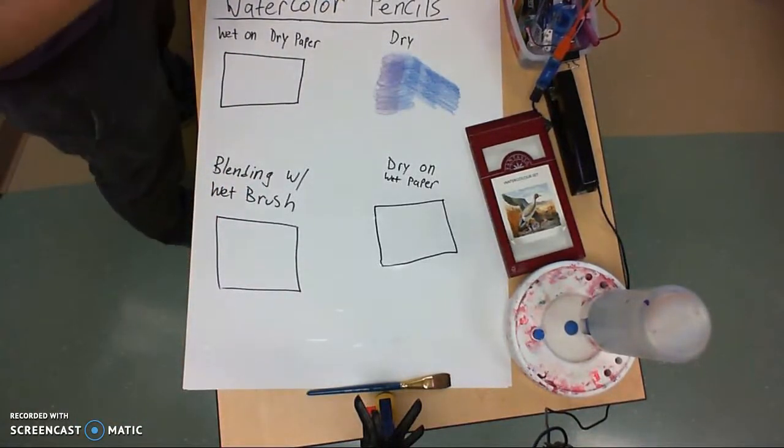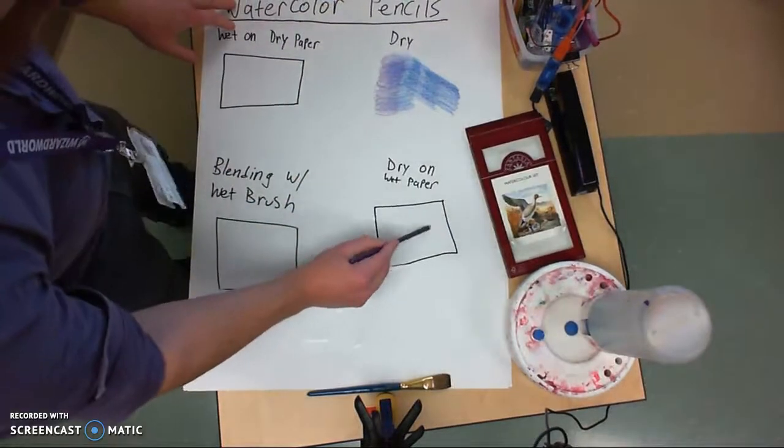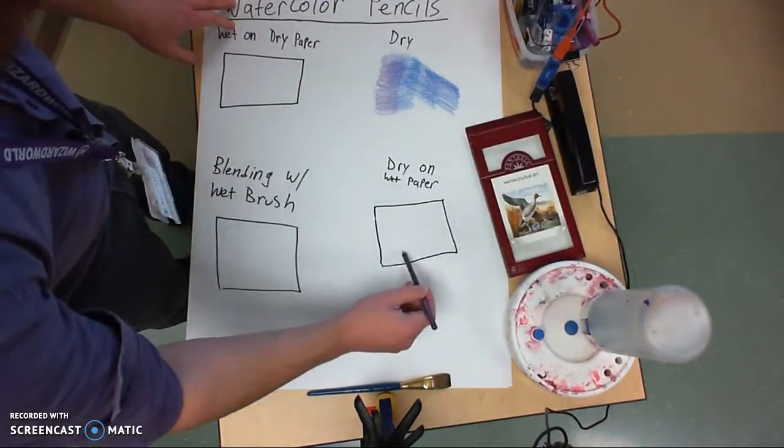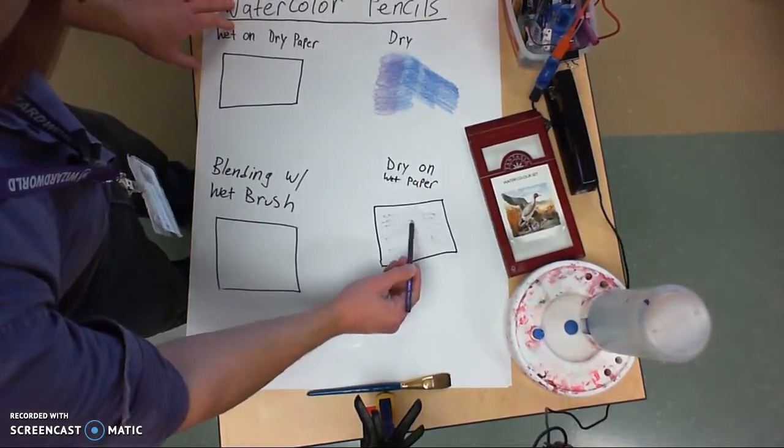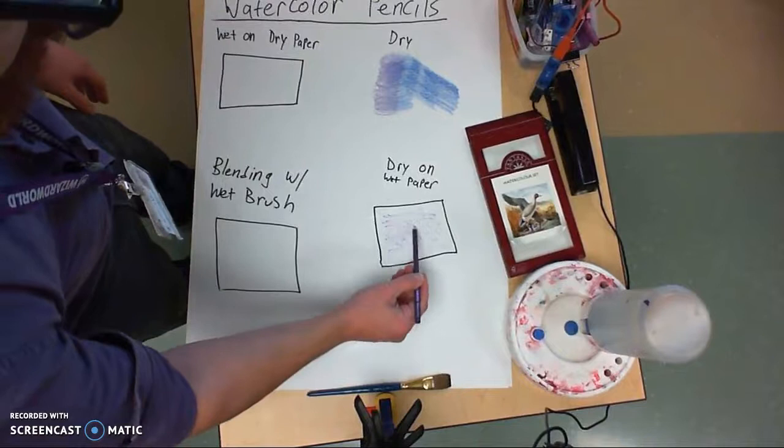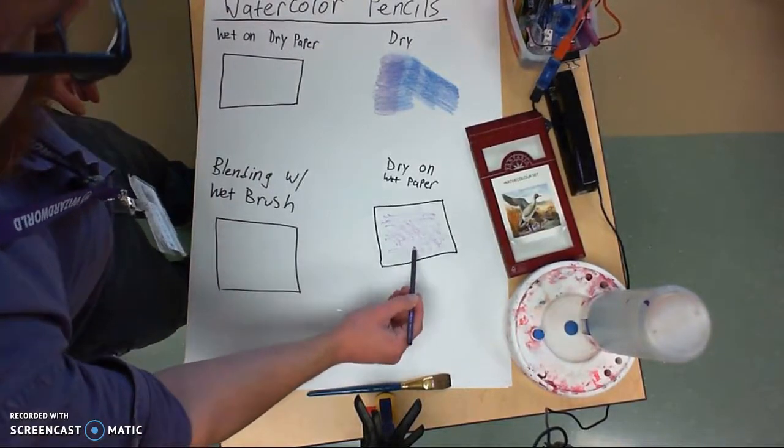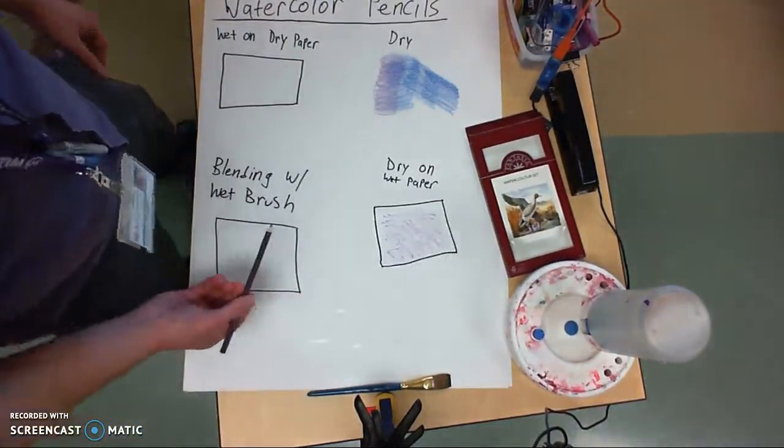Then I'm going to come over with my watercolor pencil and I can draw right on top. You can see how that looks a lot different. It kind of makes the watercolor pencil a little bit softer when I draw right on top of the wet paper as that watercolor kind of starts to even out.